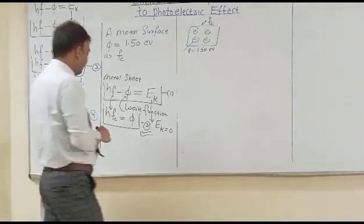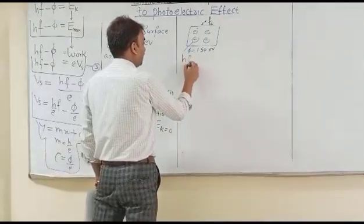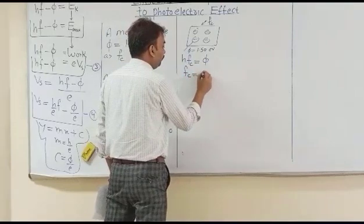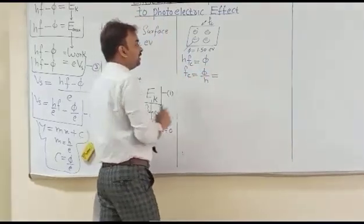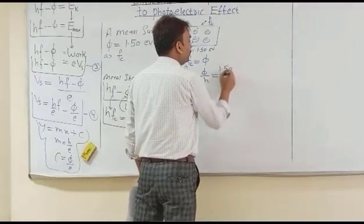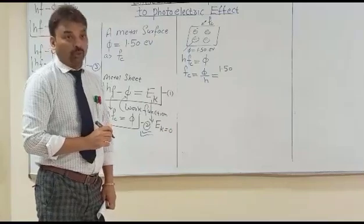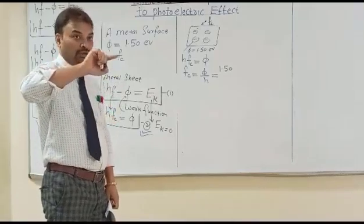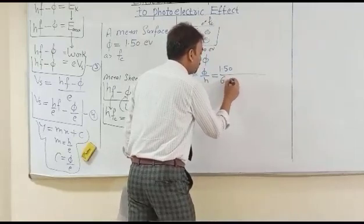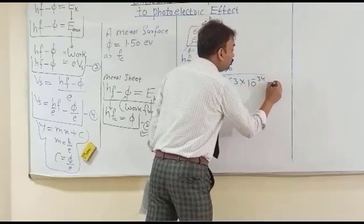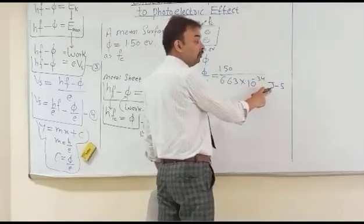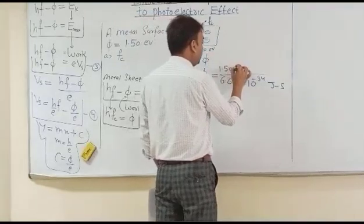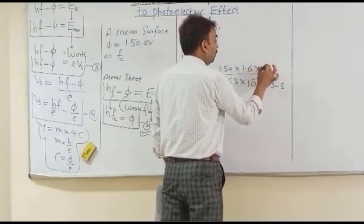We can use the formula h·fc = φ to find fc. So fc equals φ divided by h. The work function φ is given as 1.50 electron volts, but we have to convert it into joules. We multiply by the charge of the electron because in the denominator we have Planck's constant, 6.63 × 10⁻³⁴ joule·seconds, so the numerator must also be in joules.